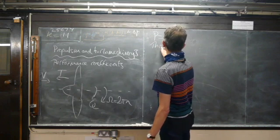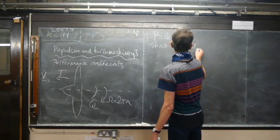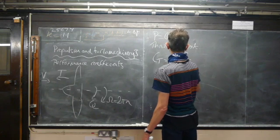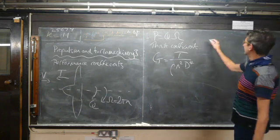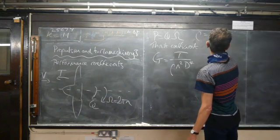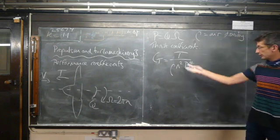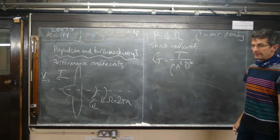CT is T over rho n squared D to the fourth, where rho is the density. Again, all these things are on the course support webpage.